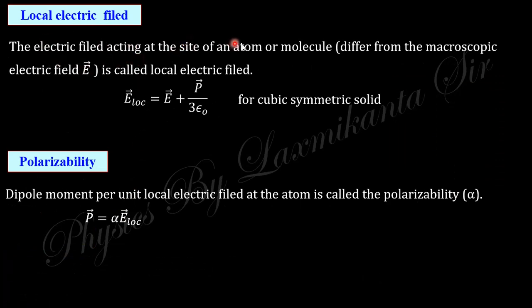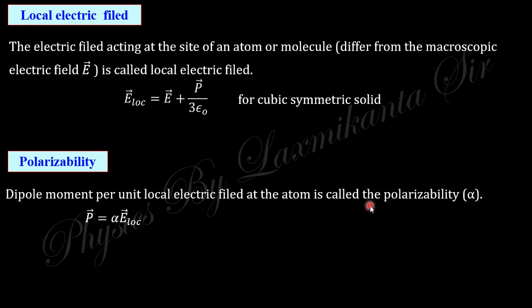Now we come to the local field. The local field is the electric field at the site of an atom or molecule, defined on a microscopic level. When we consider the overall material, this is called the macroscopic electric field; when we consider the atom or molecule level, this is called the local electric field. For cubic symmetry, the local electric field formula takes a specific form. Polarizability is the dipole moment produced per unit local field at the atom.